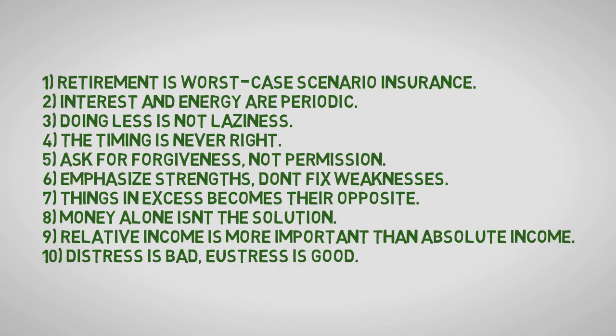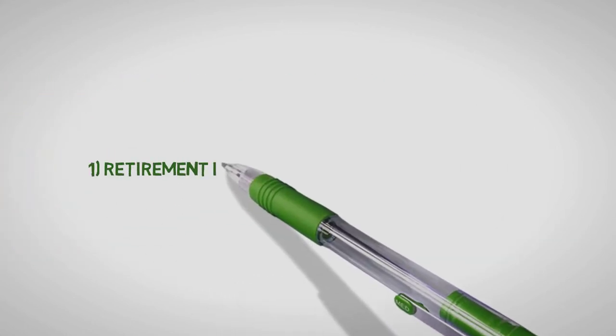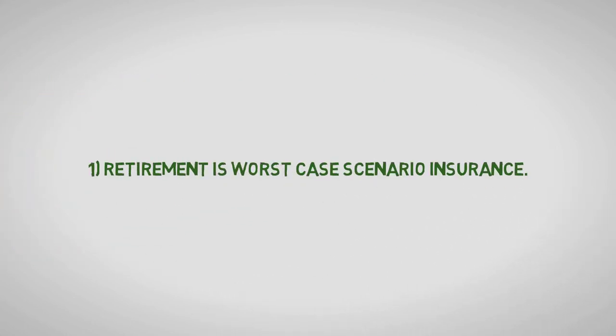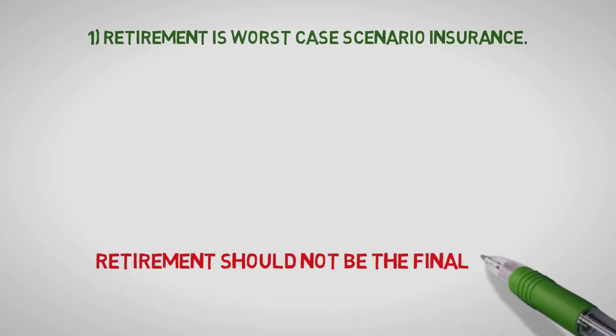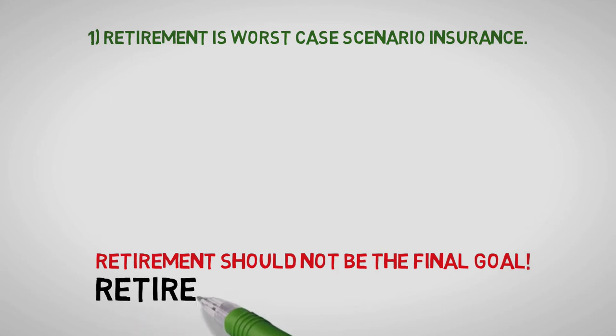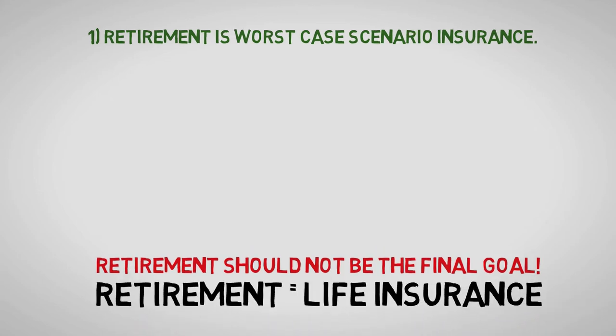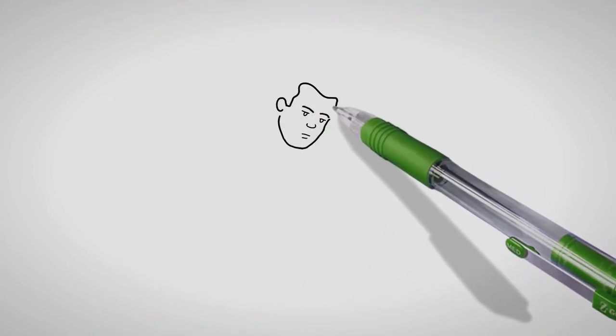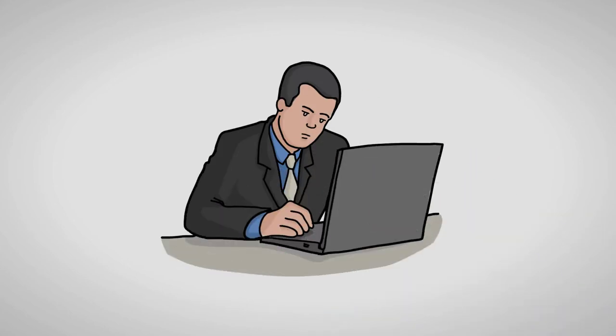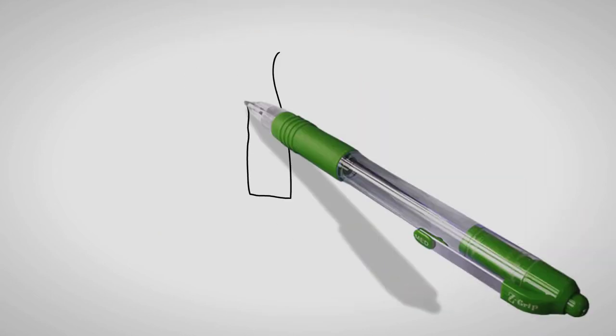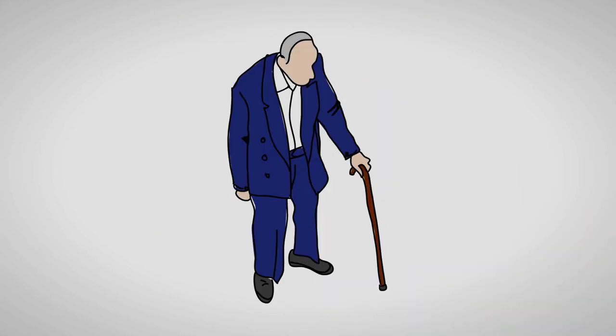Here are the 10 rules that are contrary to popular belief that you need to understand in order to beat the game. One: Retirement is the worst-case scenario insurance. Retirement should not be the final goal. Instead, it is more like a life insurance for the absolute worst-case scenario. First of all, the whole concept of retirement is based on the assumption that you do things that you don't really like during the period of your most physically fit years just to have money when you are old and have no energy.